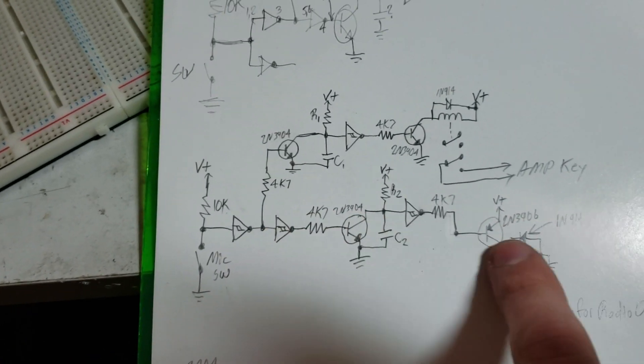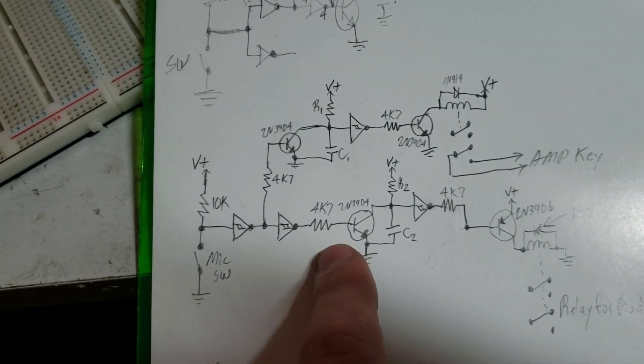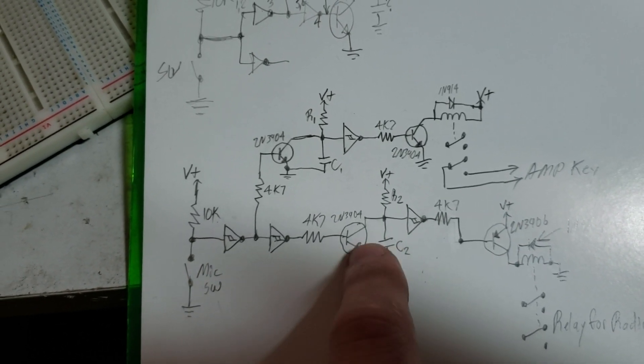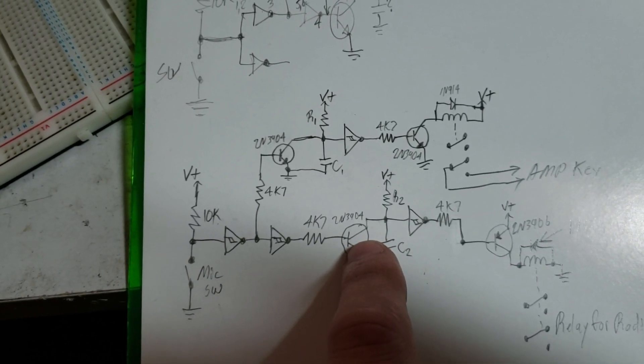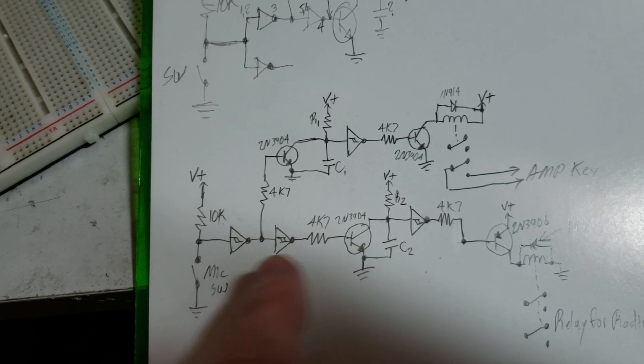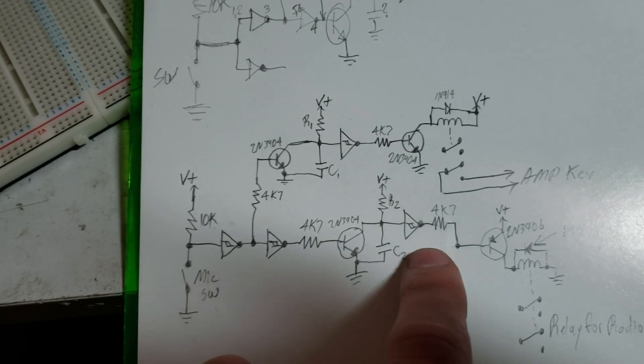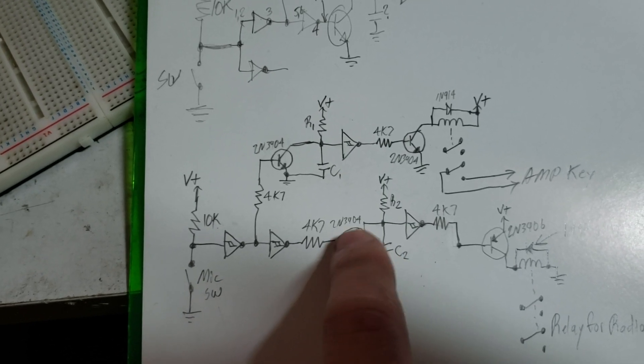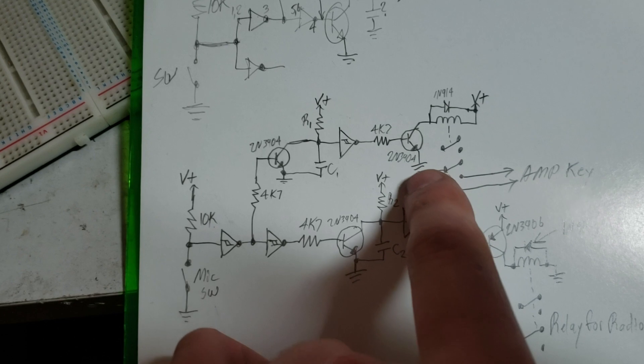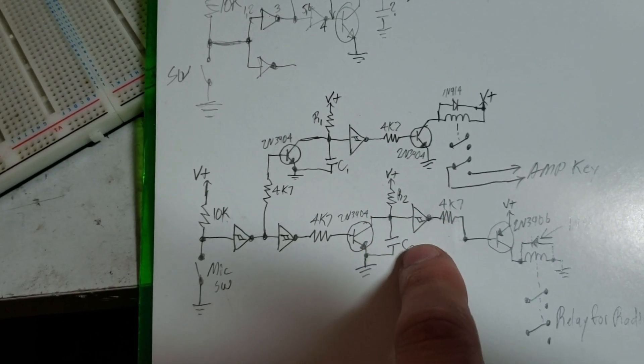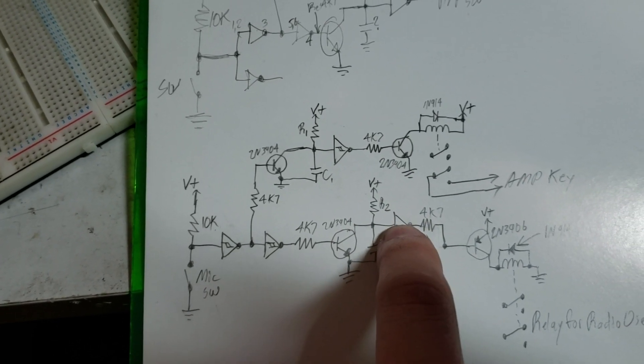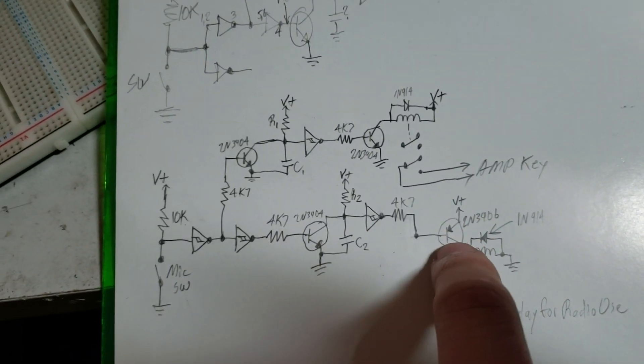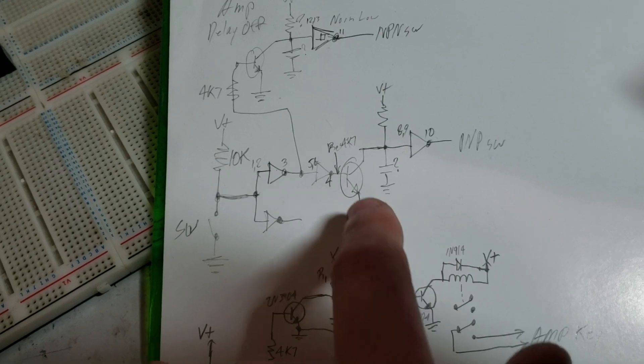Basically the same thing is going on down here for the radio relay, just in reverse. So when we click this on, this transistor releases. So under normal operation when you're not keying the mic, this transistor is turned on holding this capacitor to ground. When we turn on the mic key, this transistor turns off and the capacitor begins charging. Once it reaches a certain voltage level, the Schmidt trigger kicks over and turns on our relay.